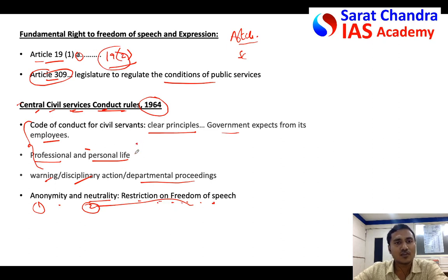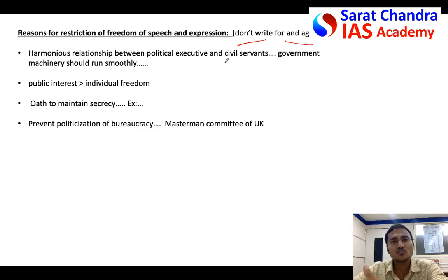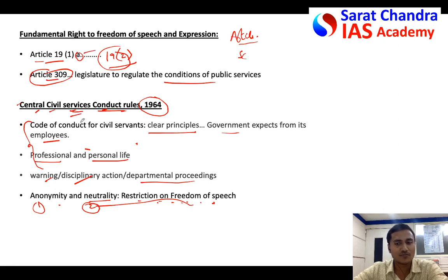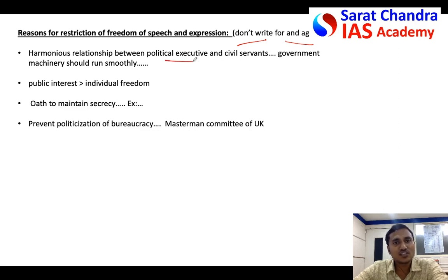Here, most students for this kind of question write 'arguments against the statement' and 'arguments for the statement' — don't do that. Don't make your answer look like a standard structure with headings put by everybody. Your answer should be freely flowing from the question. Write initially about fundamental rights, then conduct rules, then freedom of speech, and explain the reasons for the restriction. For example, if a civil servant criticizes the government policy it would go against the political executive, so he has to maintain a harmonious relationship with the political executive — only then the government machinery can run smoothly.